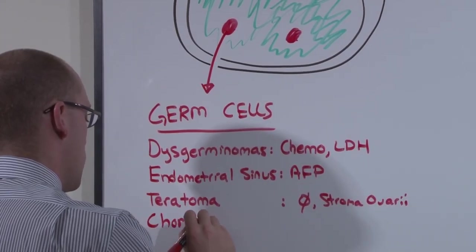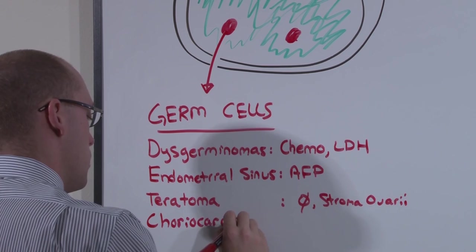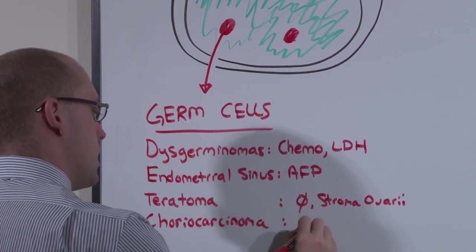And finally, choriocarcinoma can occur in the ovary, tracked by beta-HCG.